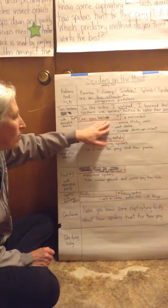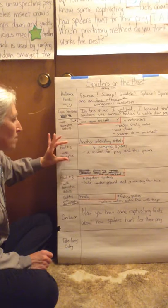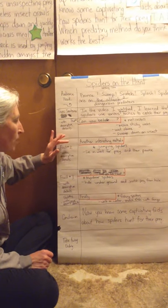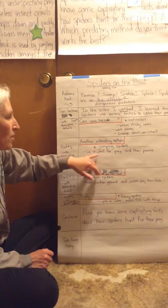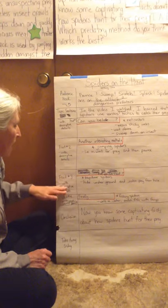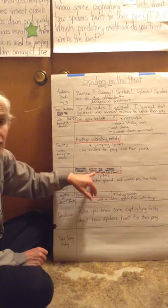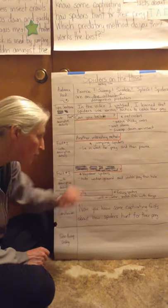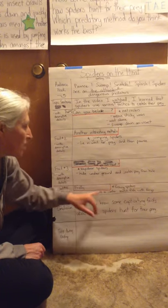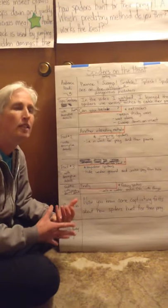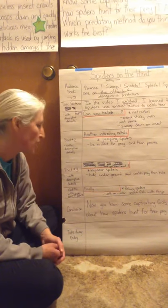I want to use 'can you believe' for my first main fact, and then talk about netcasters. For the next main part, I'm going to write 'another interesting method is' — about how the jumping spiders do their hunting. For fact number three, I'm going to talk about trapdoor spiders — I've never heard of them — so I put 'have you ever heard of trapdoor spiders?' And for my last type of spiders, it's fishing spiders, and I put 'finally,' showing as an ending transition that this is my last set of facts or information.